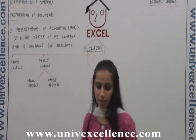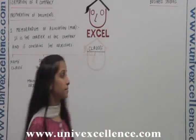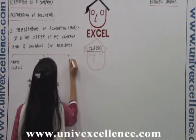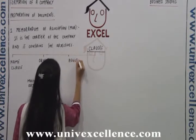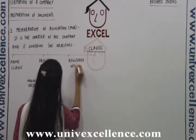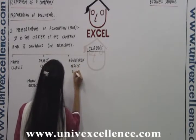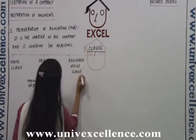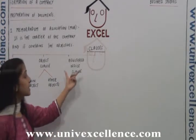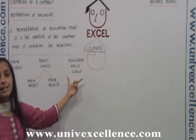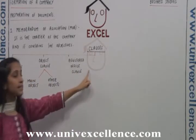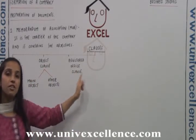The third clause is the registered office clause. This clause contains the address of the company where it will have its registered office.